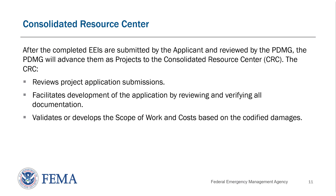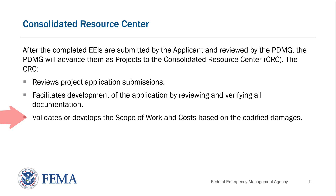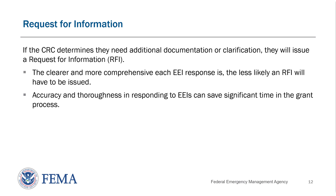After the completed EEIs have been submitted by the applicant and reviewed by the PDMG, the PDMG will advance them as projects to the CRC. The CRC reviews project application submissions, facilitates development of the application by reviewing and verifying all documentation provided, and validates or develops the scope of work and costs based on the codified damages. If the CRC determines they need additional documentation or clarification, they will issue a Request for Information, or RFI. The clearer and more comprehensive each EEI response is, the less likely an RFI will have to be issued. Accuracy and thoroughness in responding to EEIs can save significant time in the grant process.